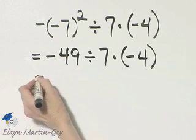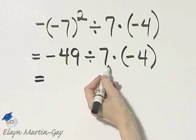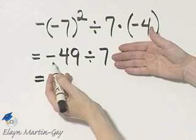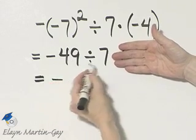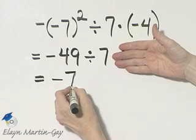So here I have negative 49 divided by positive 7, and we have a negative divided by a positive, that quotient is negative. 49 divided by 7 is 7.